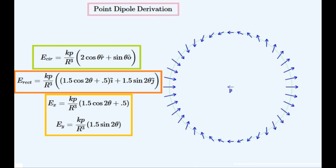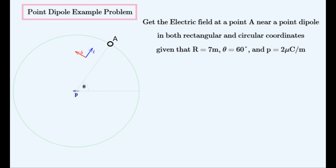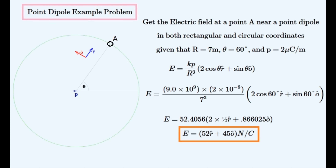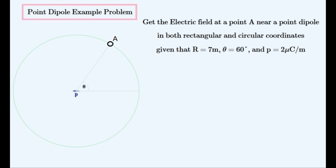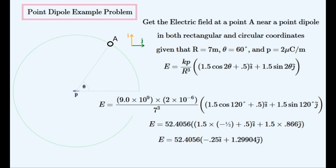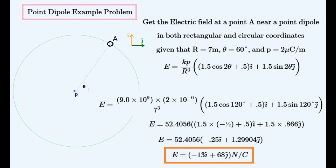Notice that these electric fields depend on the inverse cube of distance, meaning that their effect attenuates faster than for a monopole. Now for an example problem: we have to find the electric field at point A given all of this information. For the first part, we have to find the electric field in terms of circular coordinates, so we'll use this equation and substitute all of the values into it. After simplification, we get the answer for the electric field in circular coordinates. Now to get the same electric field in rectangular coordinates using the other equation. Substituting these values in gives a long expression which simplifies to our final answer after much simplification.